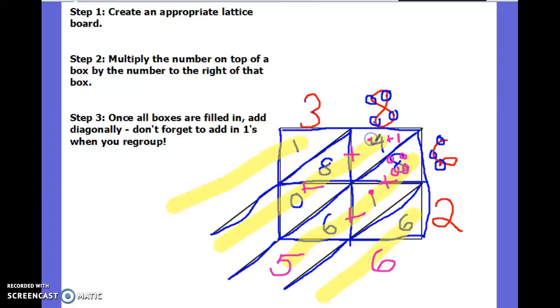I'm still using touch points to add accurately. 8, 9, 10, 11, 12, and 1 is 13. Carry my 1, bring down my 3, and finally, 1 touch point plus 1 touch point is always 2. So in this case, my final answer is 2,356. And I put it into a box.